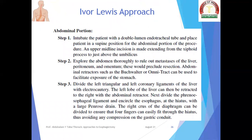Now let us discuss the different steps of the Ivor Lewis operation, starting with the abdominal portion. Step one: intubate the patient with a double-lumen endotracheal tube and place the patient in a supine position. An upper midline incision is made extending from the xiphoid process to just above the umbilicus. Step two: explore the abdomen thoroughly to rule out metastases of the liver, peritoneum, and omentum, which would preclude resection. Abdominal retractors can be used to facilitate exposure of the stomach.